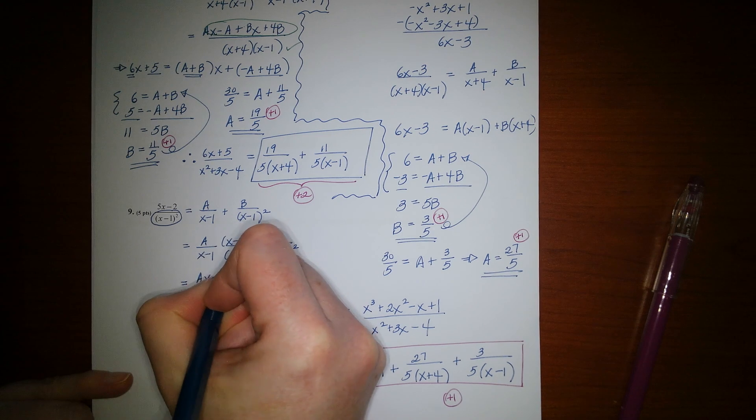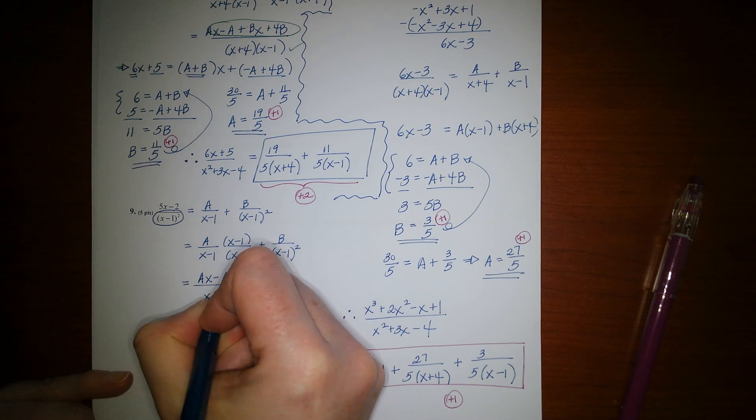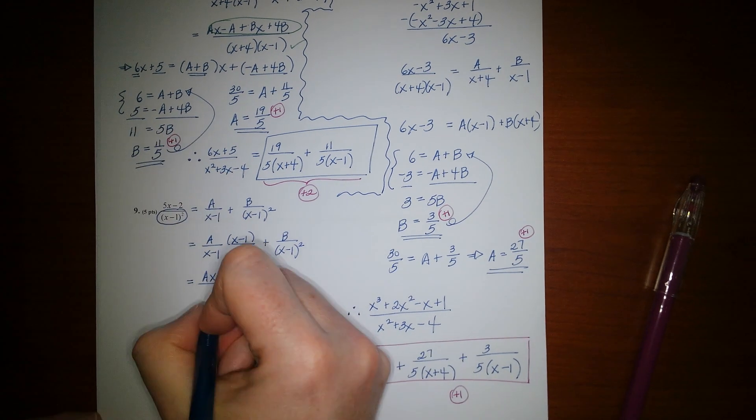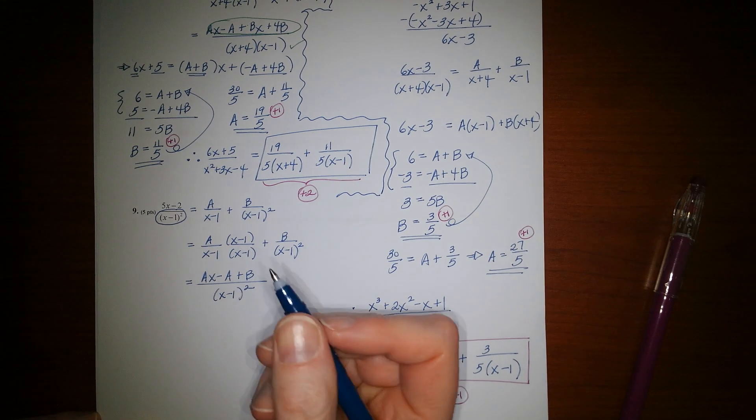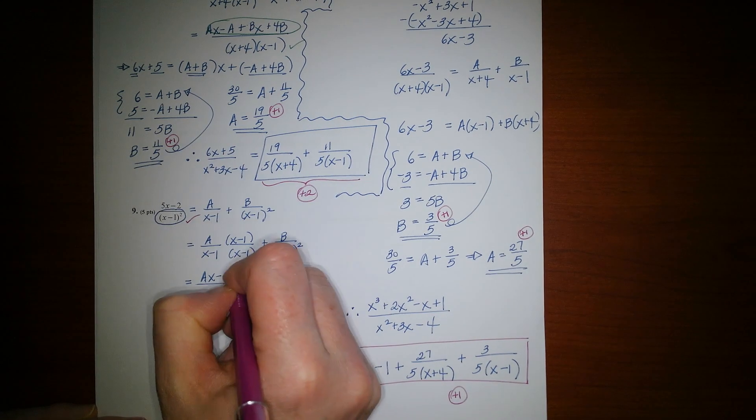So then I would have ax minus a plus b all over x minus 1 squared. Okay. So now, now that you've won the denominator battle, now let's win the numerator battle.